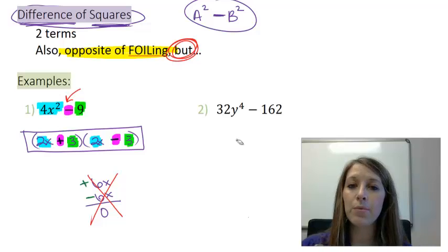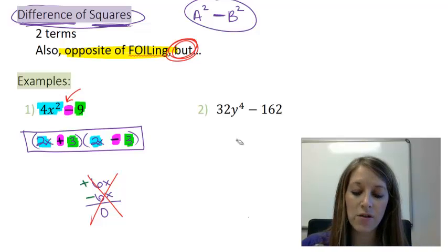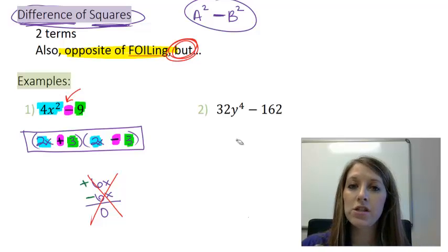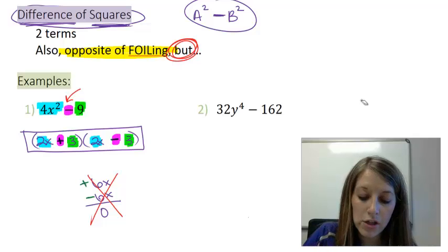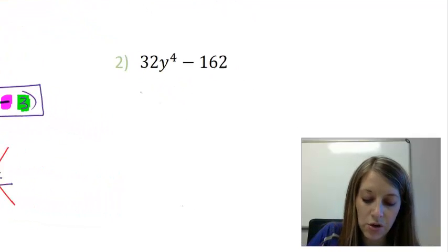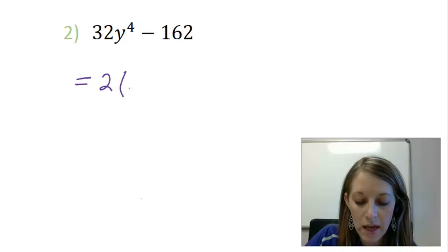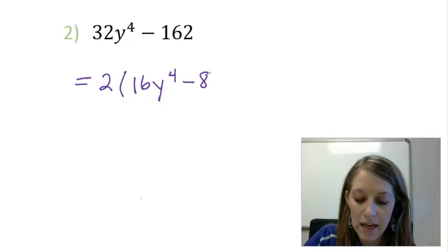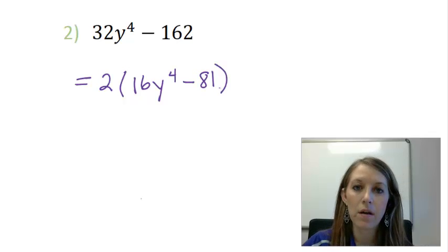So let's go over to example 2 and let's see if we can factor that example. I suggest that you pause the video and try and do it on your own first before I walk you through it step by step. Okay, the first question that you should always ask yourself is, do you have any common factors throughout? And you do. The largest common factor here is 2. If I factor that out, that gives me a 16y to the 4th minus 81.